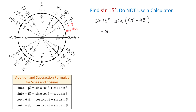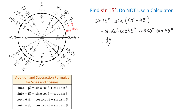According to this formula, we will write sine of 60 degrees times cosine of 45 degrees minus cosine of 60 degrees times sine of 45 degrees. And now, from the unit circle, sine of 60 degrees is square root of 3 over 2.